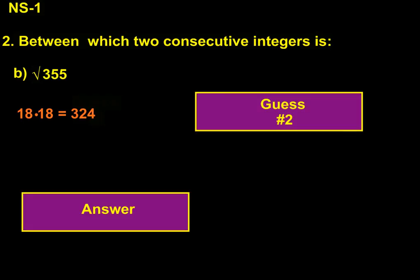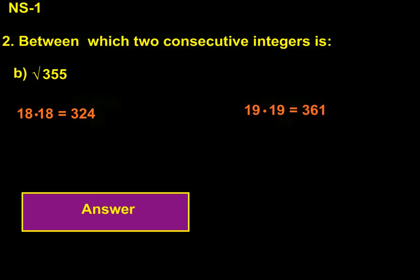So in order for this to work, that would mean that 19 would have to work on the high side of 355. And so 19 times 19 is 361, and so it does work. So the two consecutive integers that the square root of 355 falls between would be 18 and 19.